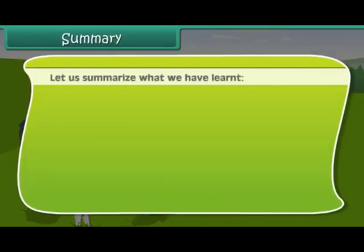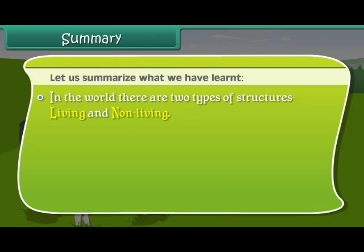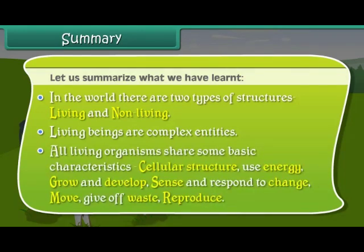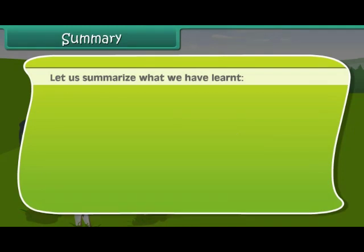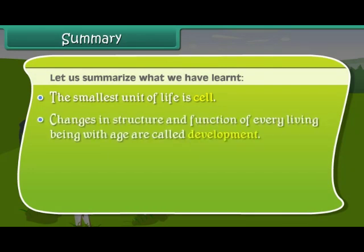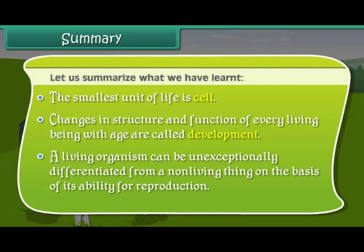Let us summarize what we have learned. In the world there are two types of structures: living and non-living. Living beings are complex entities. All living organisms share some basic characteristics: cellular structure, use energy, grow and develop, sense and respond to change, move, give off waste, and reproduce. The smallest unit of life is the cell. Changes in structure and function of every living being with age are called development. A living organism can be unequivocally differentiated from a non-living thing on the basis of its ability for reproduction.